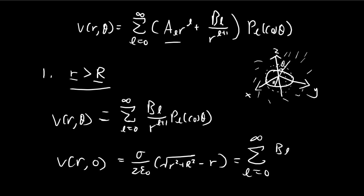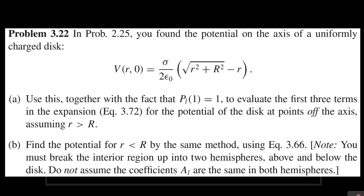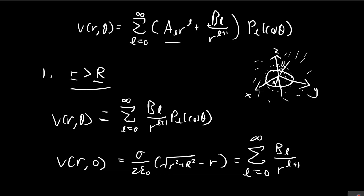When we substitute theta equals zero, cosine of zero equals one. For the Legendre polynomials, when the argument equals one, the output equals one — so P_l(1) = 1. This means we can simply omit the Legendre polynomial factor, and now we can use this to find what B_l is.